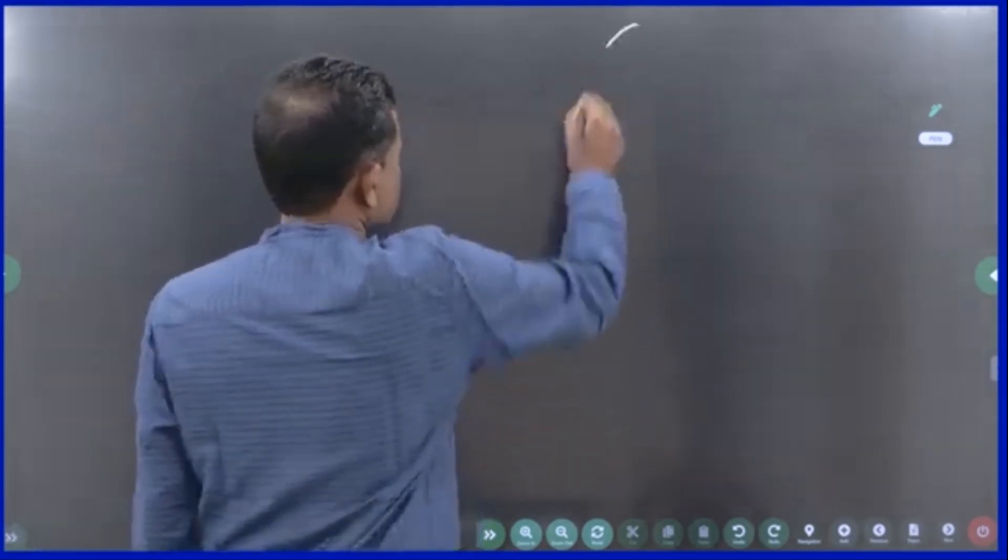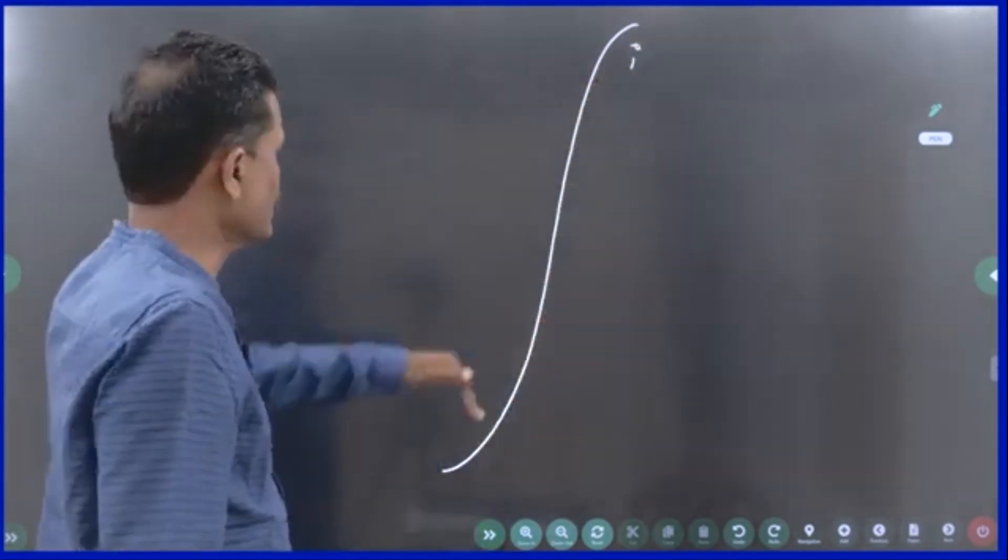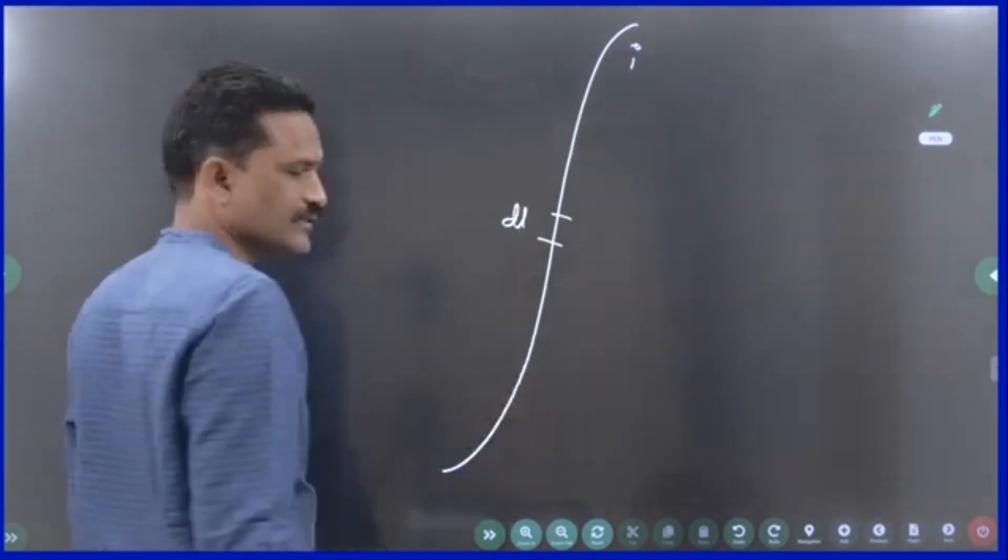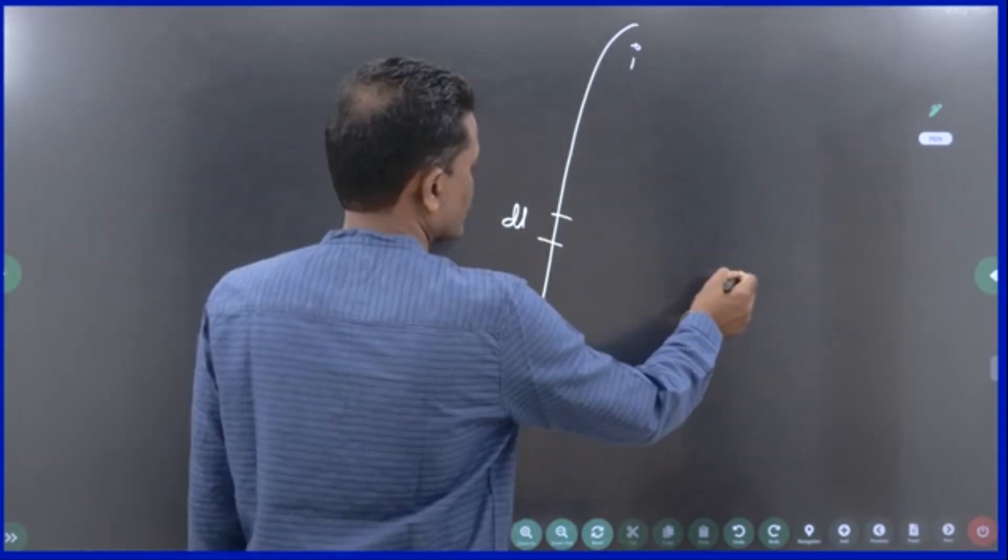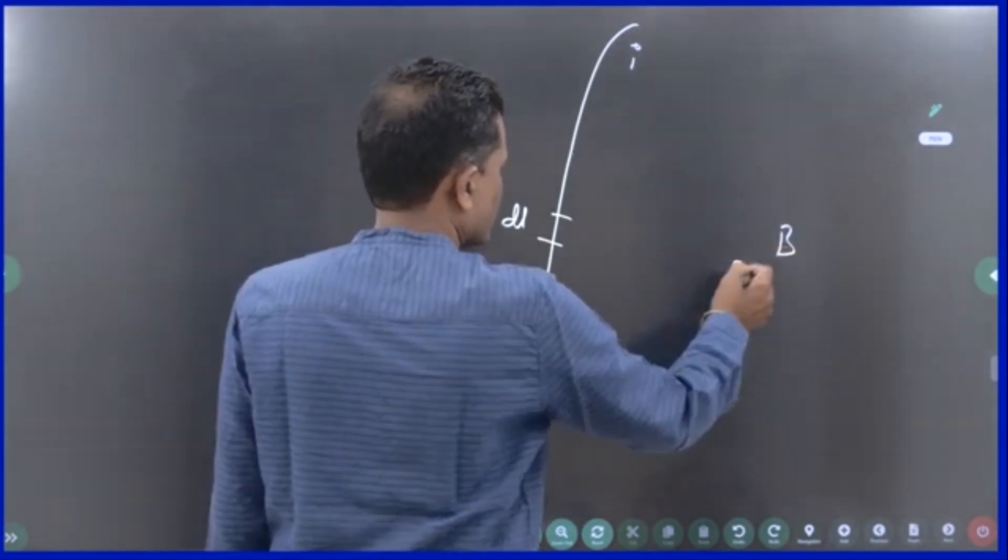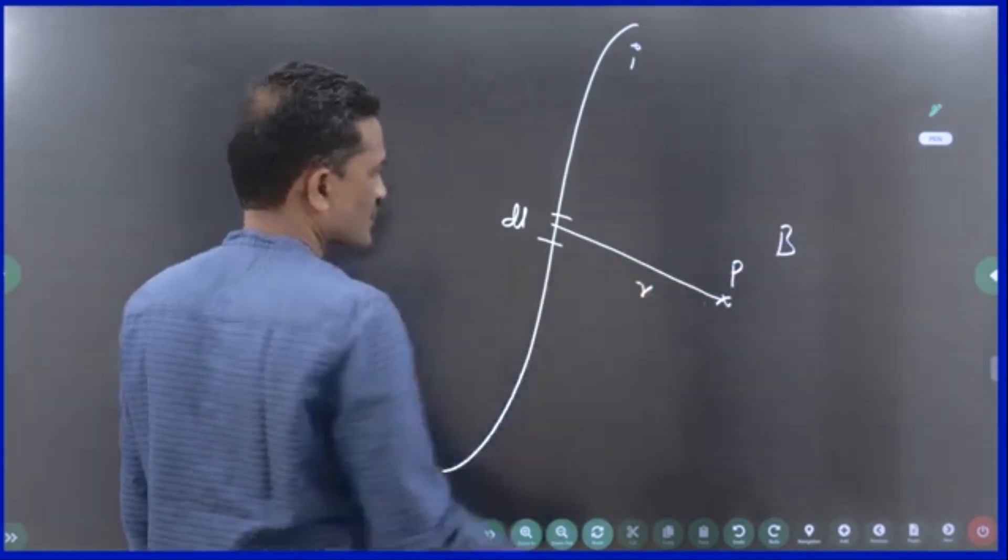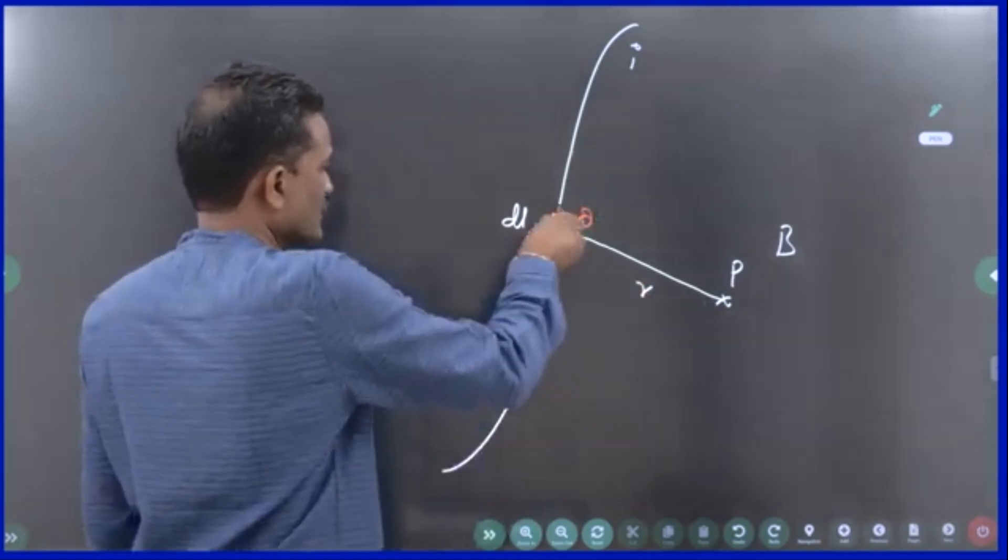So, there is a wire through which some current I is going. I cut it into many pieces. Some length is dl. Just now we discussed. I want to, my intention is to find the magnetic induction at a point B, which is at a distance of R from the wire, and it is making an angle theta with this dl.